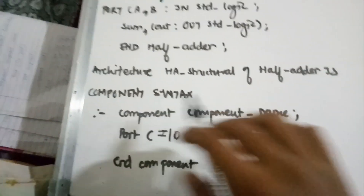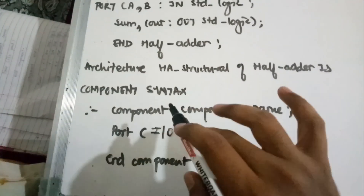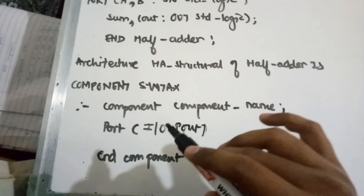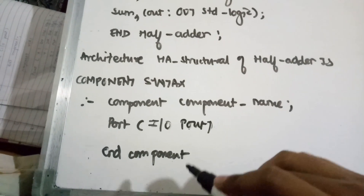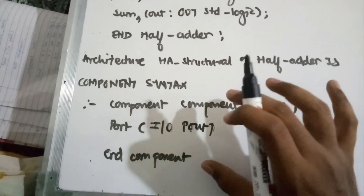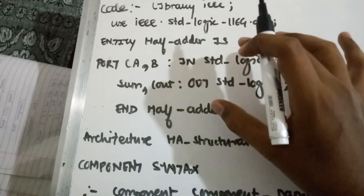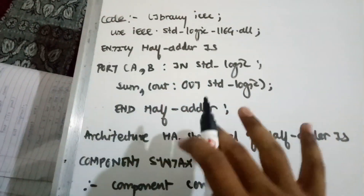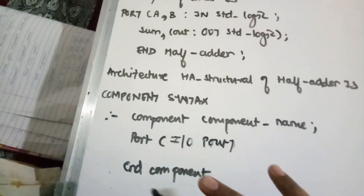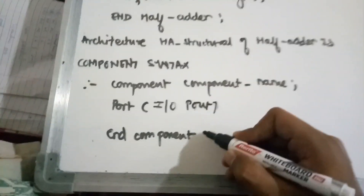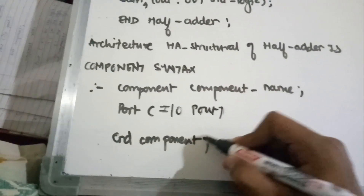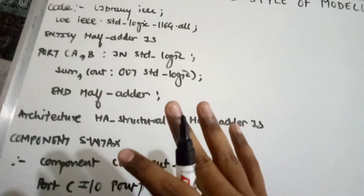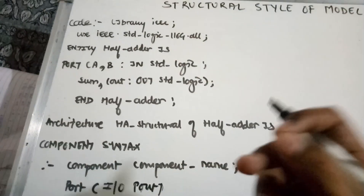The syntax for component declaration is: component <component_name>, then port (same as in an entity with input and output ports), then end component. This is the same as an entity — the only difference is the entity ends with the entity name and the component ends with 'component' only.